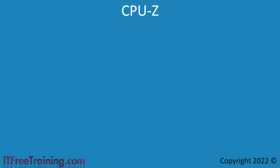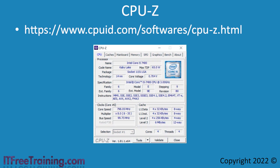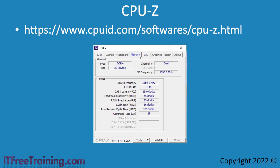Once you have your memory installed, you may want to check that multi-channel is working. Sometimes the BIOS will tell you if multi-channel is working. CPUID also provides a free tool called CPU-Z which can be used to check. The first tab of CPU-Z gives a lot of information about the CPU and which features it supports. The tab I am interested in is Memory — at the top right of the tab, the channel is shown. In this case, the channel is shown as dual.